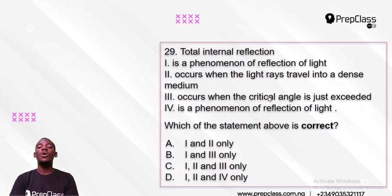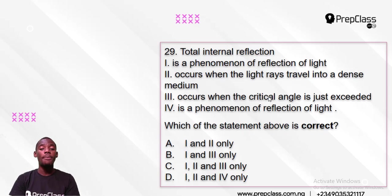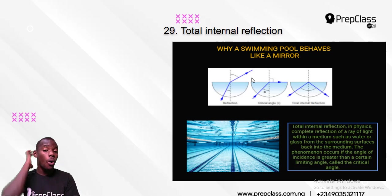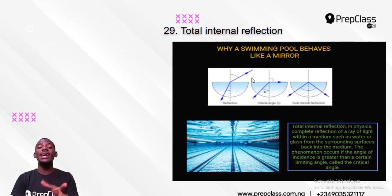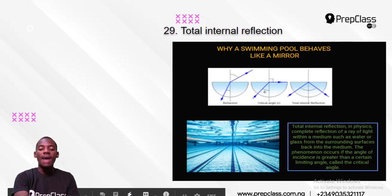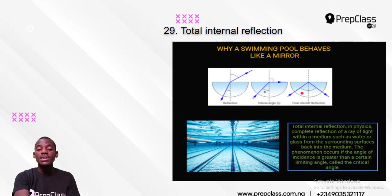Total internal reflection is a phenomenon of reflection of light. When you are inside a swimming pool, the light coming from your eyes goes up to the top of the pool and then bounces back — this is total internal reflection. It goes this way and then it bounces back. That is why a swimming pool behaves like a mirror.